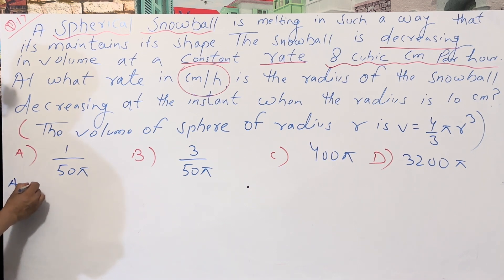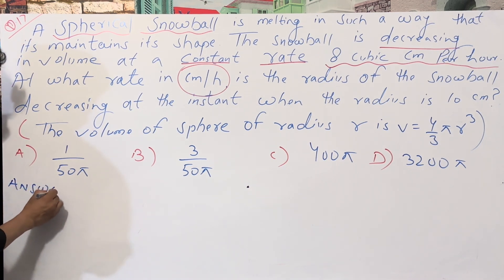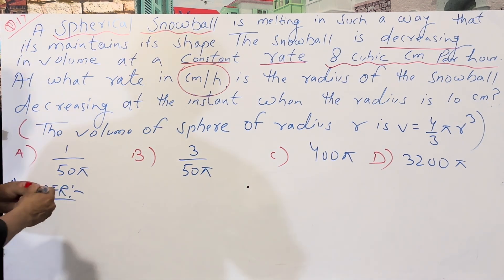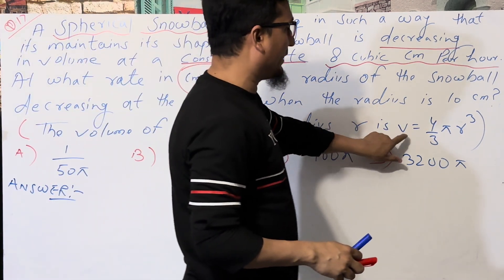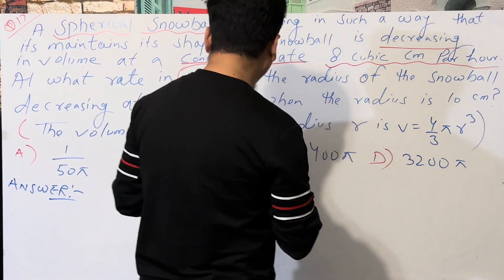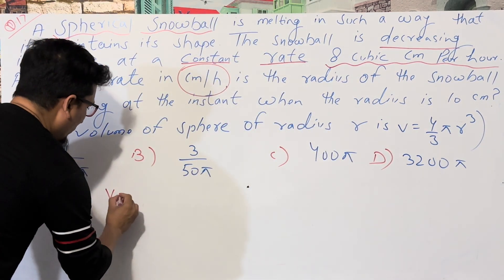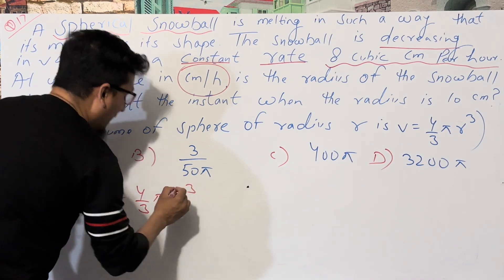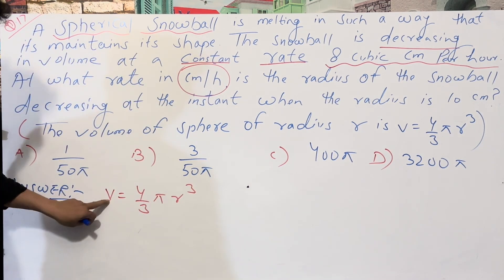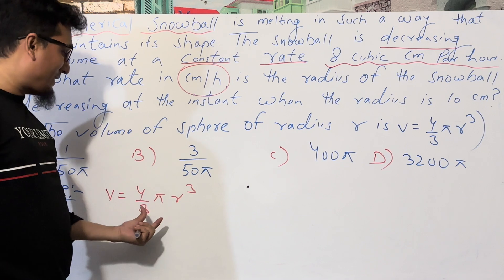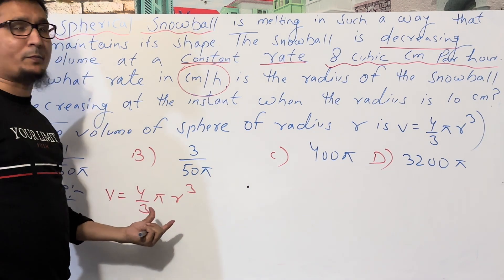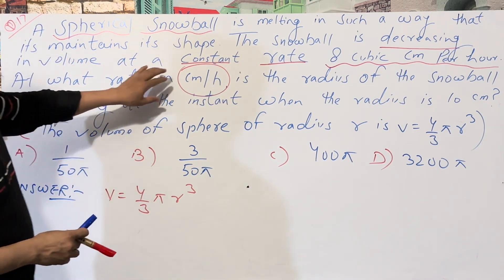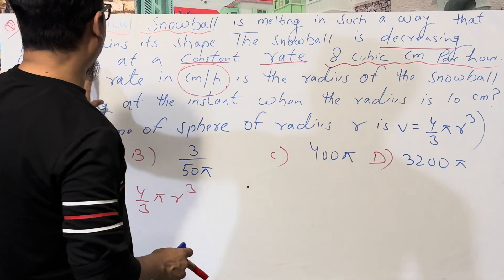To solve this, we start by writing down the volume of a sphere: V = (4/3)πr³. Here V is the volume and r is the radius.